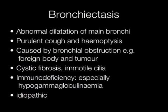Bronchiectasis is caused by abnormal dilatation of a main bronchus. Clinically there is a purulent cough with hemoptysis. Causes include bronchial obstruction — for example by a foreign body or tumour. Other predisposing conditions include cystic fibrosis, immotile cilia, and immunodeficiency especially hypogammaglobulinemia, or sometimes the cause is idiopathic.